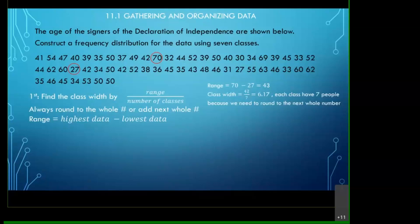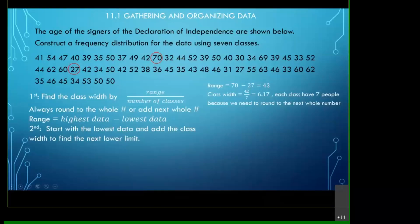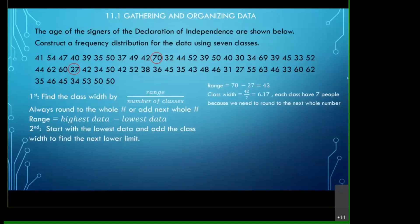So the class width is 7, meaning each class covers 7 data values. Another important point: even if the division gives you a whole number, you still have to go up one. You always go up, because you want to include every single person. For example, if I mistakenly used 69 minus 27 and got 42 divided by 7 = 6, I would still have to round up to 7, otherwise I wouldn't include everyone in the data.